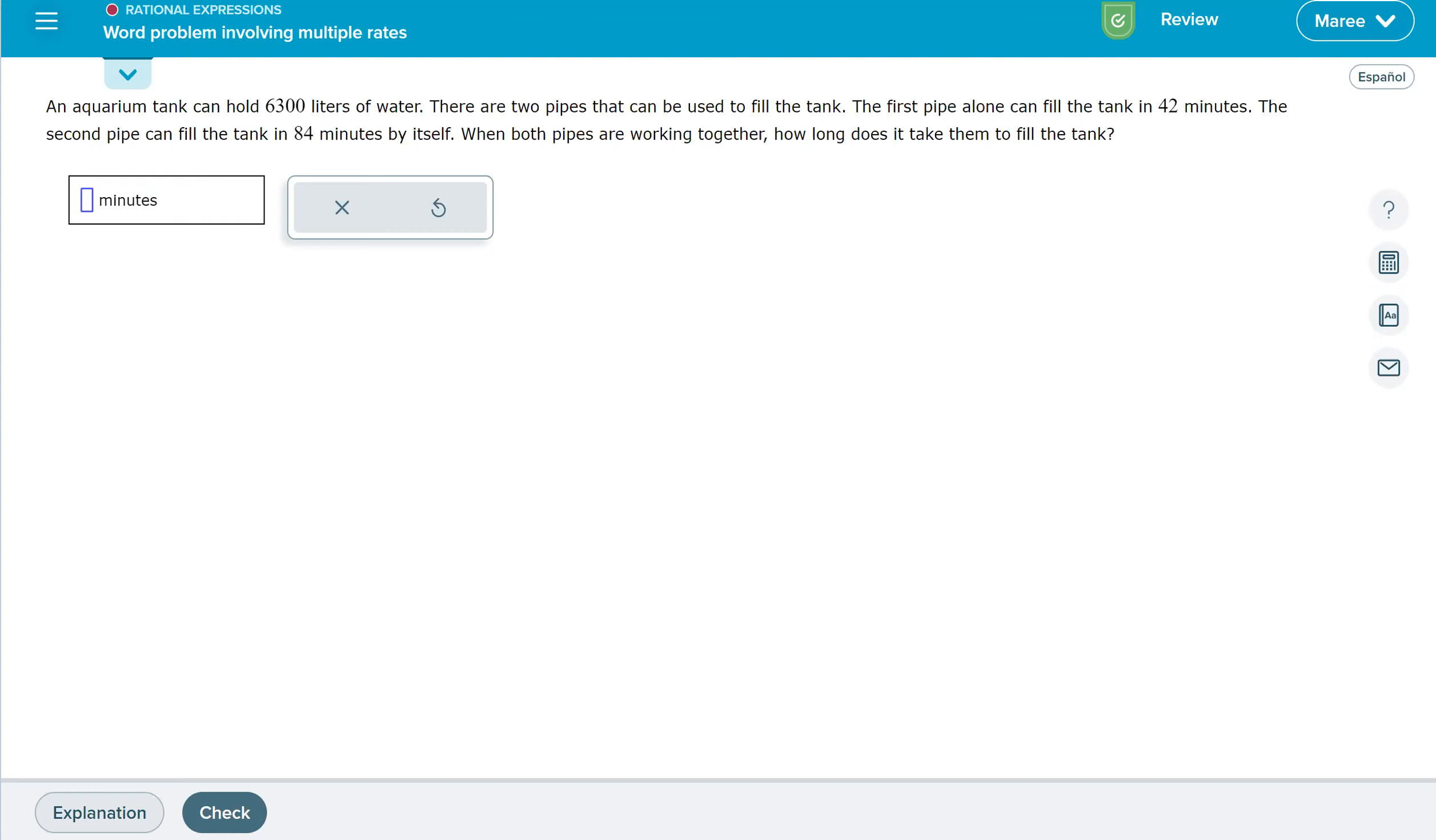There are two pipes that can be used to fill the tank. The first pipe alone can fill the tank in 42 minutes. So if we do 6,300 liters divided by 42 minutes, that will give us 150 liters per minute.